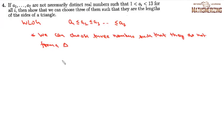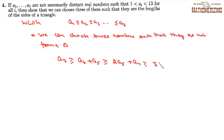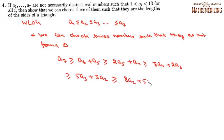If no three form a triangle, then for any three consecutive terms the largest must be at least the sum of the other two. So a₇ ≥ a₆ + a₅, a₆ ≥ a₅ + a₄, giving a₇ ≥ 2a₅ + a₄. Continuing: a₅ ≥ a₄ + a₃ gives a₇ ≥ 3a₄ + 2a₃; and further substitutions yield a₇ ≥ 8a₂ + 5a₁.